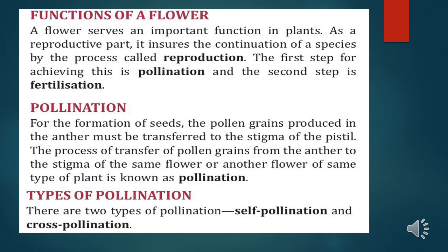The main function of a flower is reproduction. The first step of reproduction is pollination and the second step is fertilization. Pollination is the process of transfer of pollen grains from the anther to the stigma of the same flower or another flower of the same type of plant.